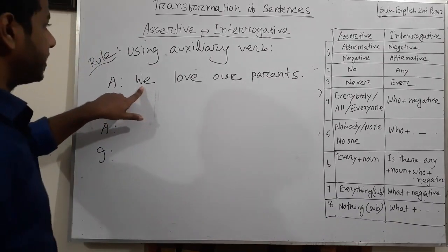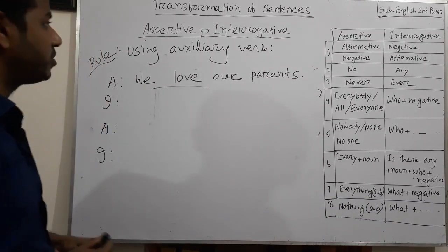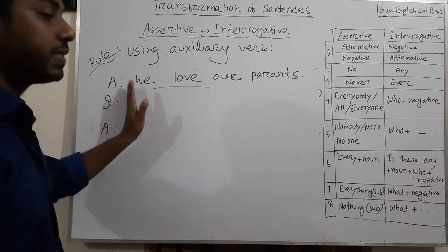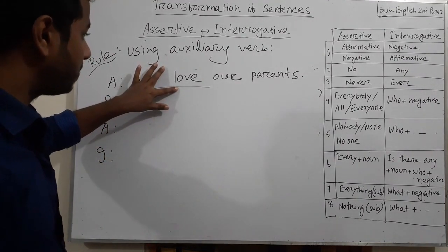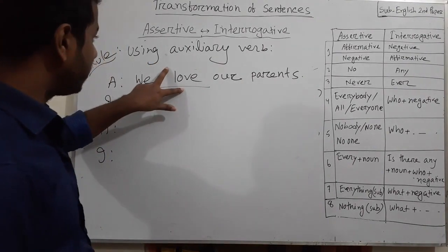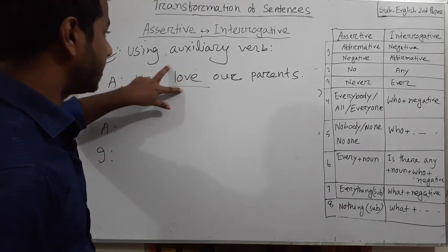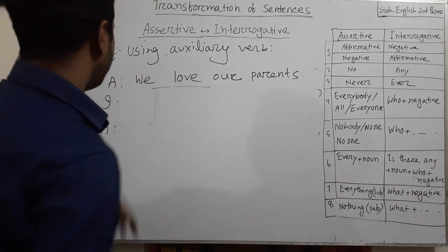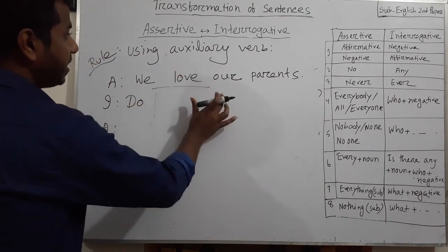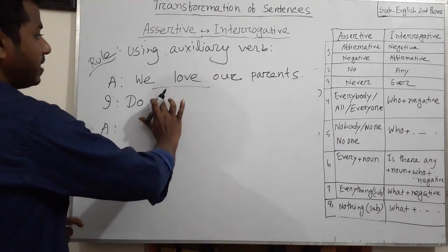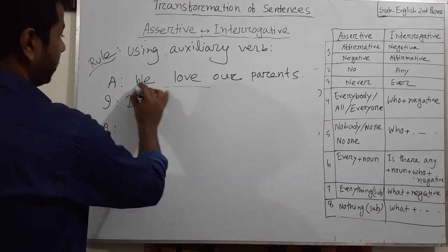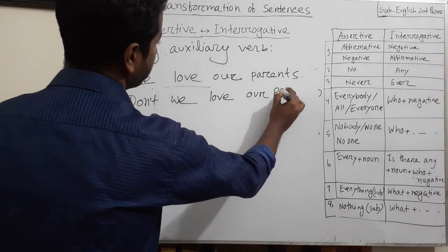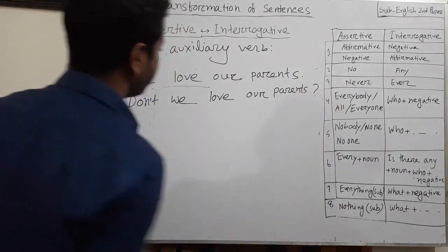For example: 'We love our parents.' In this assertive sentence there is no auxiliary verb. It is present indefinite tense. As the subject is 'we' (first person), the auxiliary verb will be 'do'. As it is an affirmative sentence, in interrogative it will be negative. So: 'Don't we love our parents?' — 'don't' then subject 'we', then verb 'love', then 'our parents', then question mark.